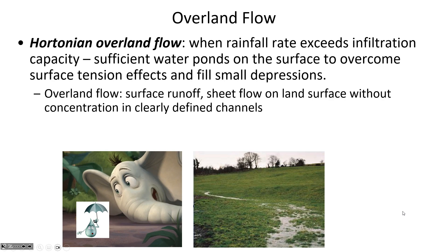What we're talking about is some different formulas available to calculate the speed that water travels over the surface. Hortonian overland flow is when the rainfall intensity exceeds the ability of the soil to infiltrate water. There is some maximum infiltration rate early in a storm that declines as soil suction head decreases, and whenever rainfall intensity exceeds infiltration capacity, there's excess water at the surface that will flow over it.